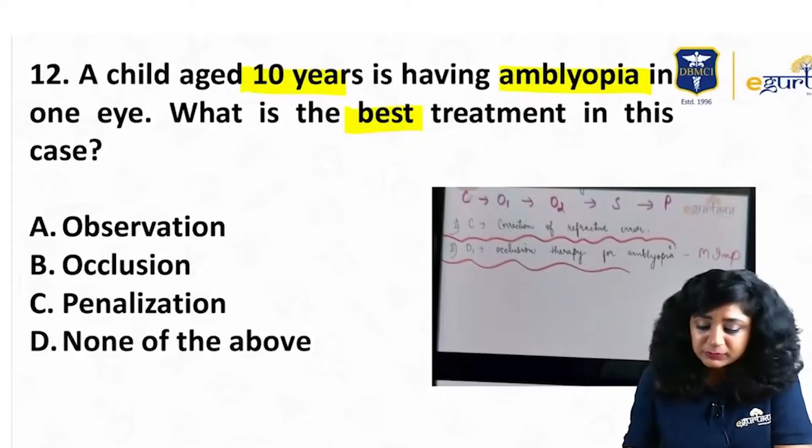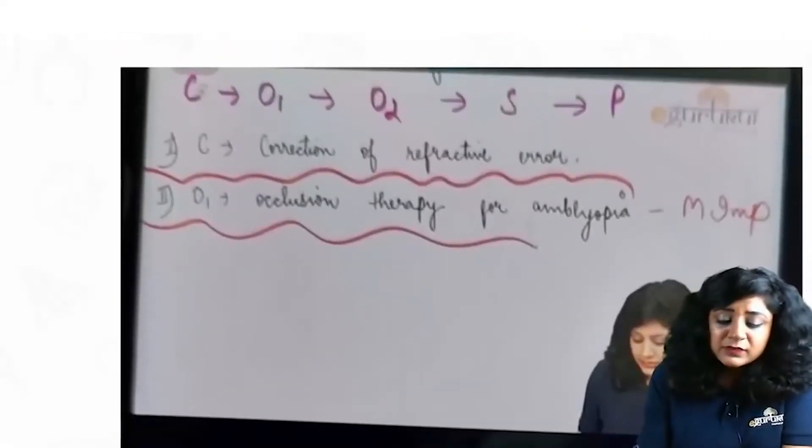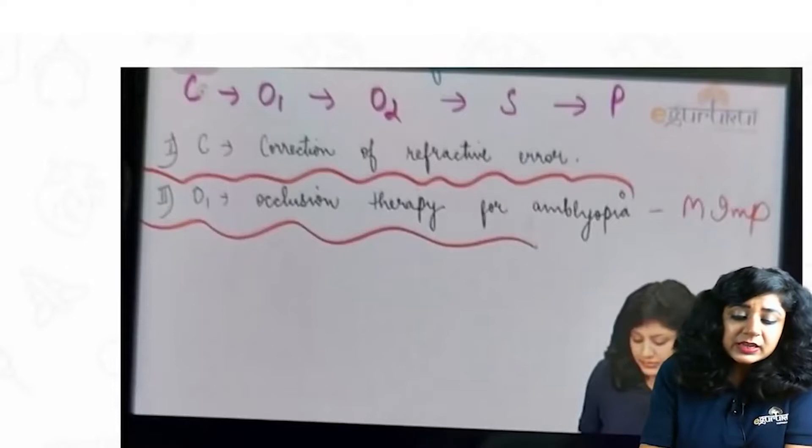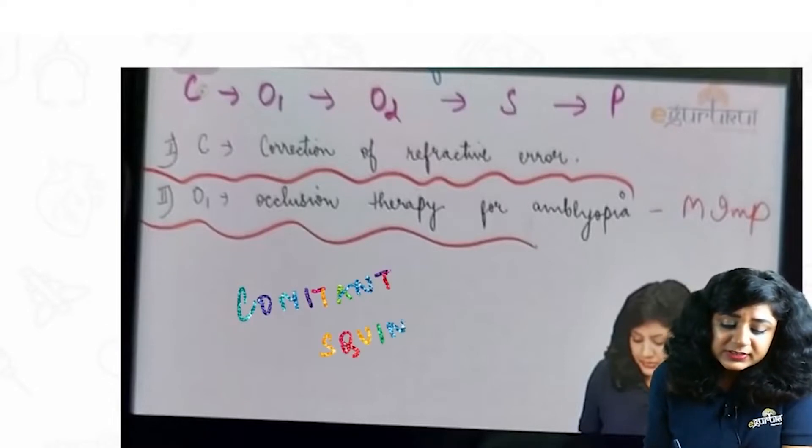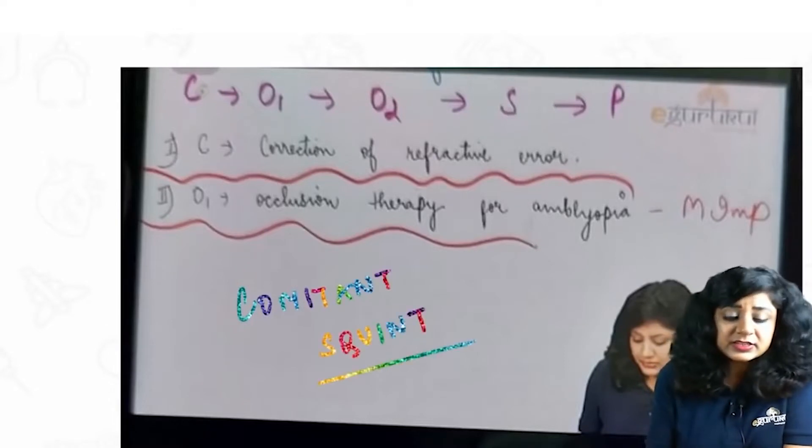Again, a direct question from the notes. If you remember when we discussed what is called comitant squint, when we discussed the treatment of comitant squint, what is the sequence that we discussed first?